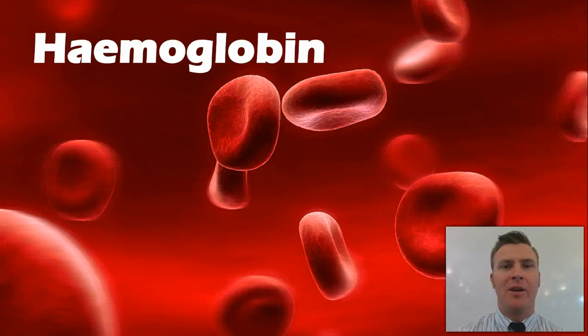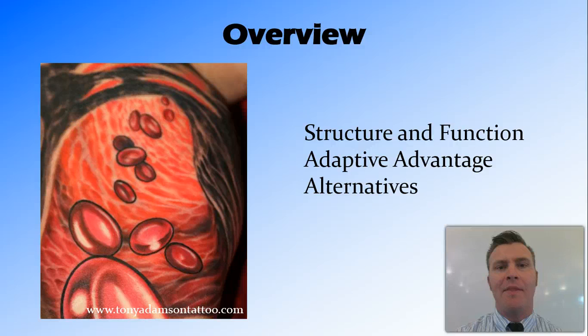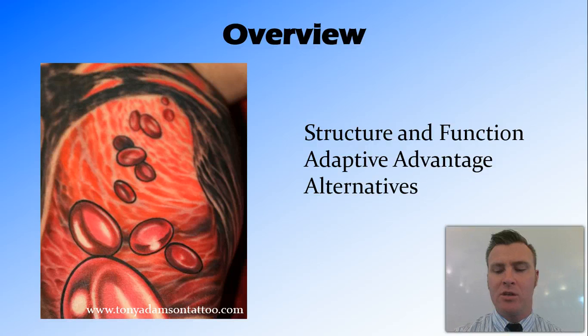In this video, we're going to be looking at hemoglobin. We're going to look at the structure and function, the adaptive advantage that hemoglobin gives mammals, as well as some alternatives that are found elsewhere in the animal kingdom.